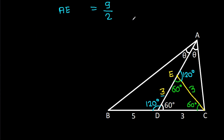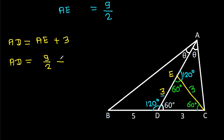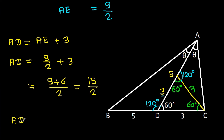Now AD equals AE plus DE equals AE plus 3. So AD equals 9 over 2 plus 3, which is 9 plus 6 over 2, giving AD equals 15 over 2. Thank you.